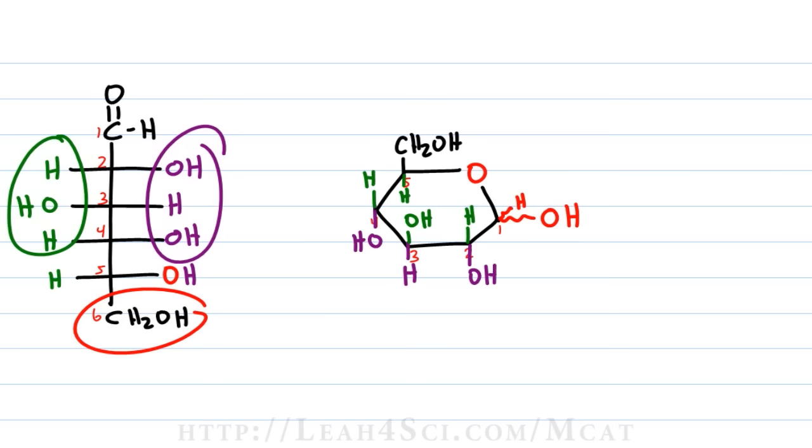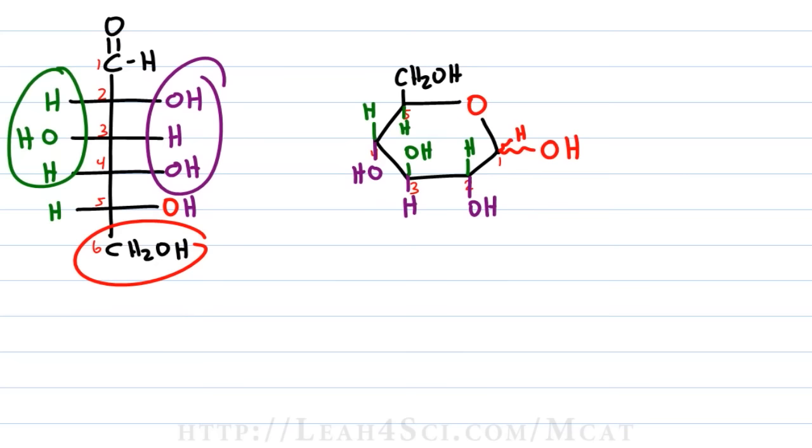If OH is up for beta, hydrogen is down. If OH is down for alpha, hydrogen is up. So that's the Haworth. Now let's see how to turn this into a chair conformation.